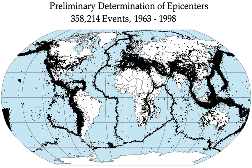An earthquake, also known as a quake, tremor, or temblor, is the shaking of the surface of the earth resulting from the sudden release of energy in the earth's lithosphere that creates seismic waves. Earthquakes can range in size from those that are so weak they cannot be felt to those violent enough to toss people around and destroy whole cities.